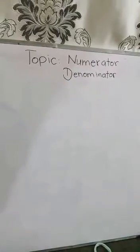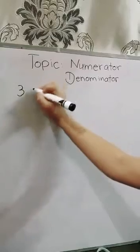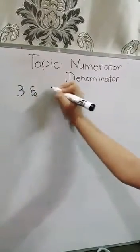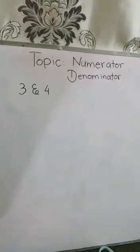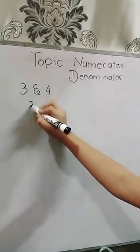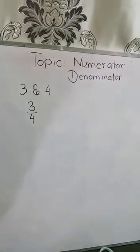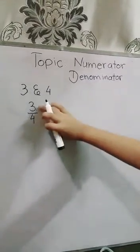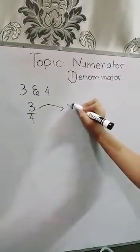Let's suppose our first example 3 and 4, but when we write in the fraction form it is like this, 3 by 4. So this 3 is numerator.